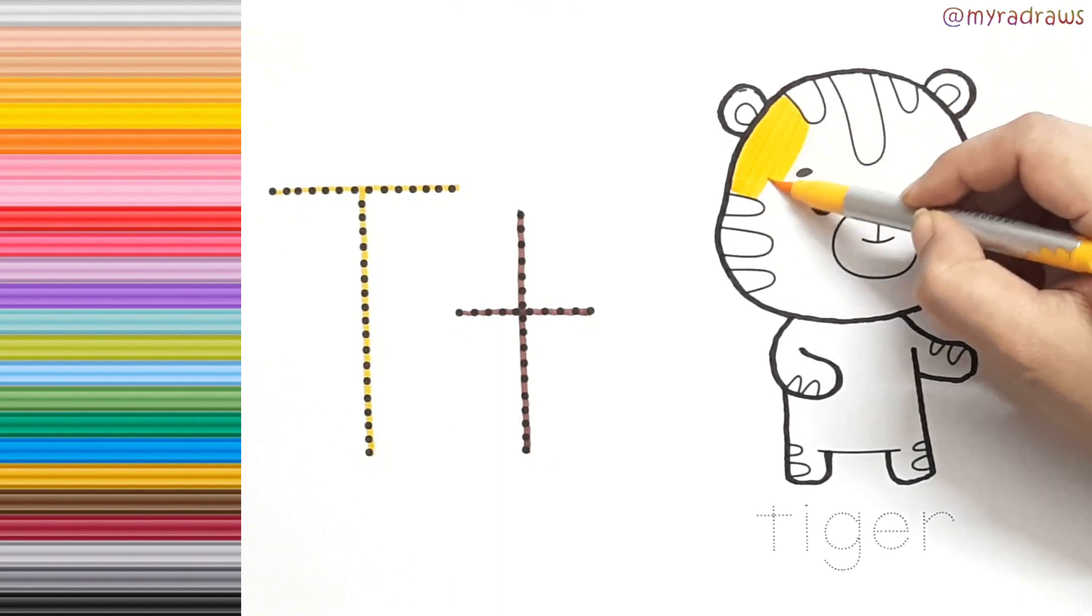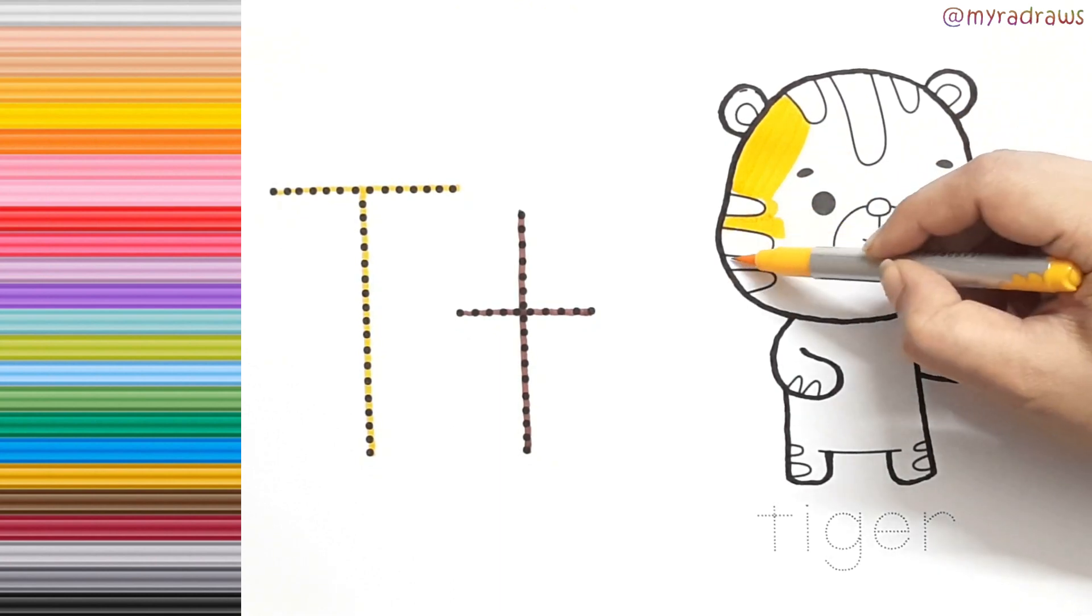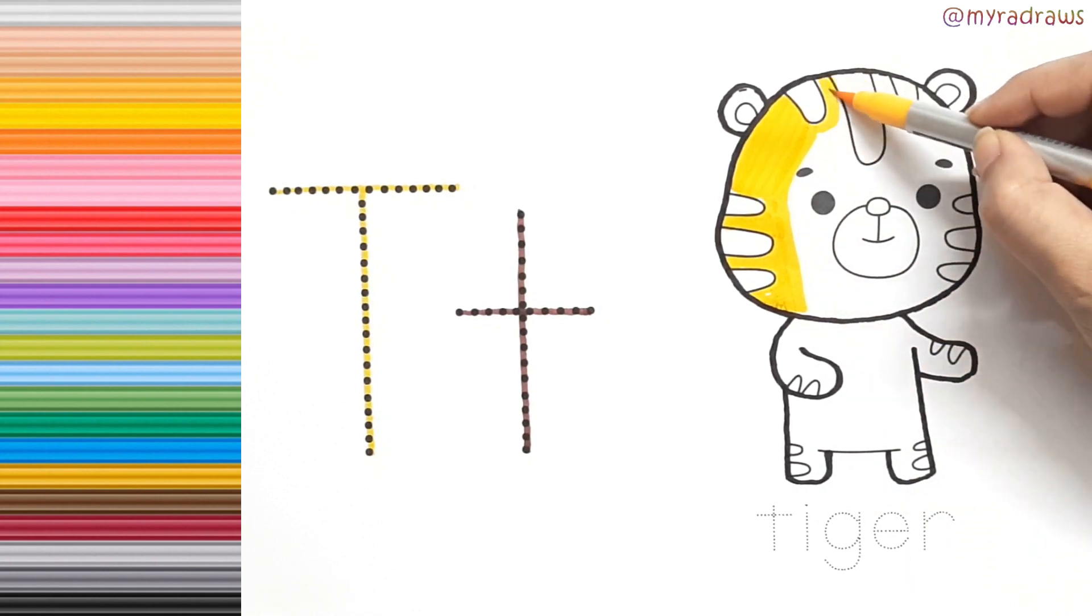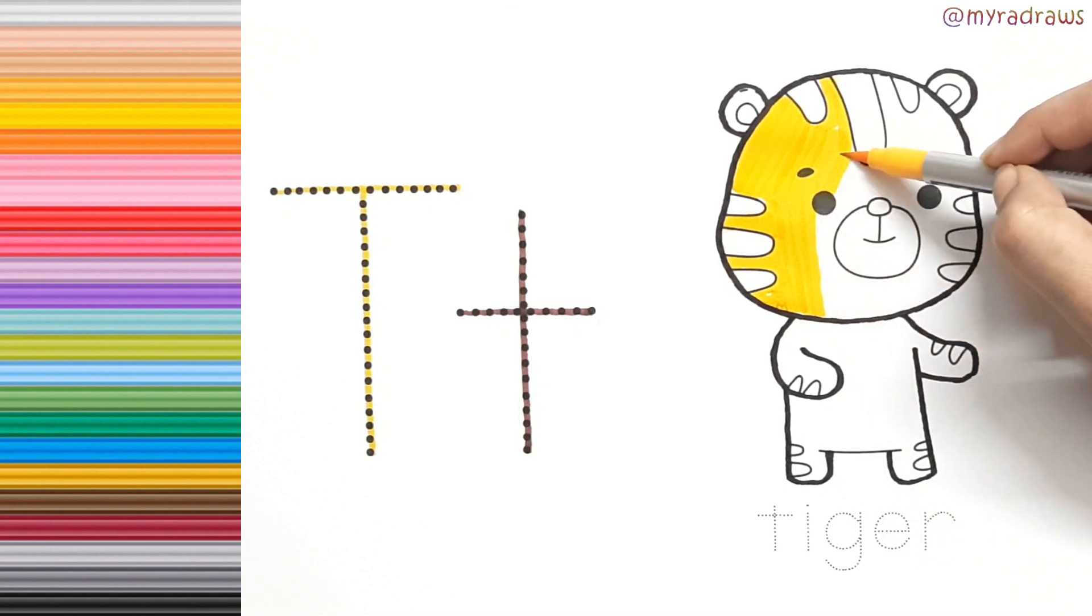Yellow. W, X, Y, and Z. Now I know my ABCs. Next time won't you sing with me?